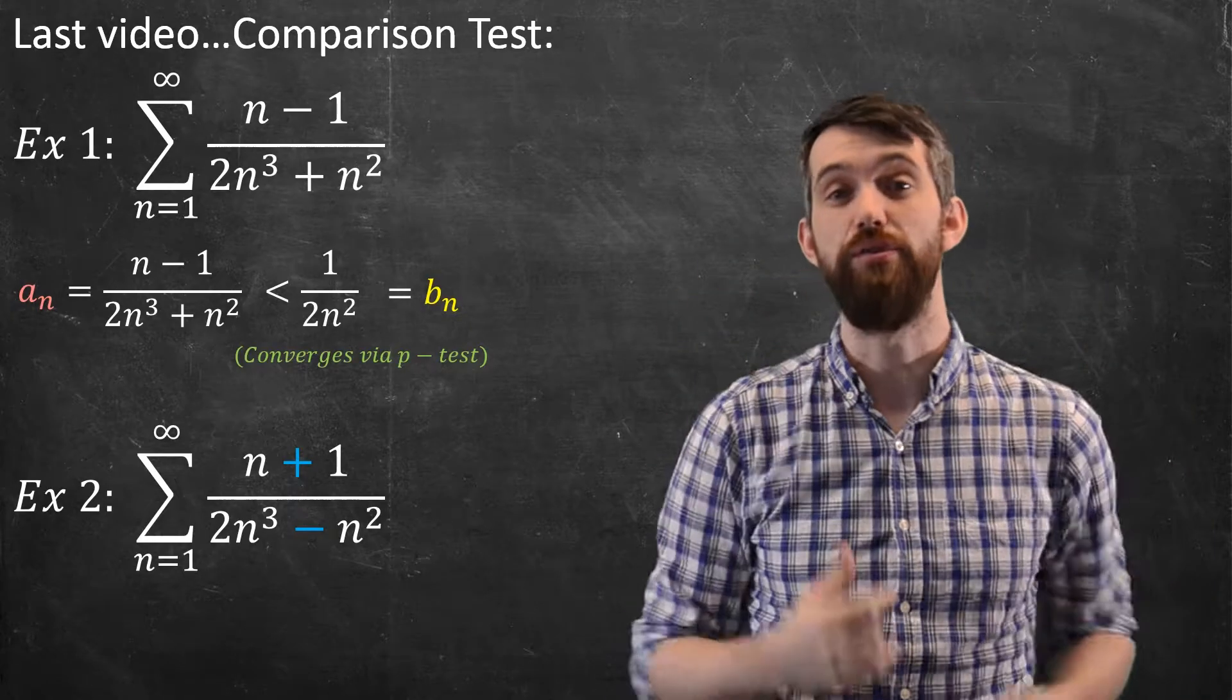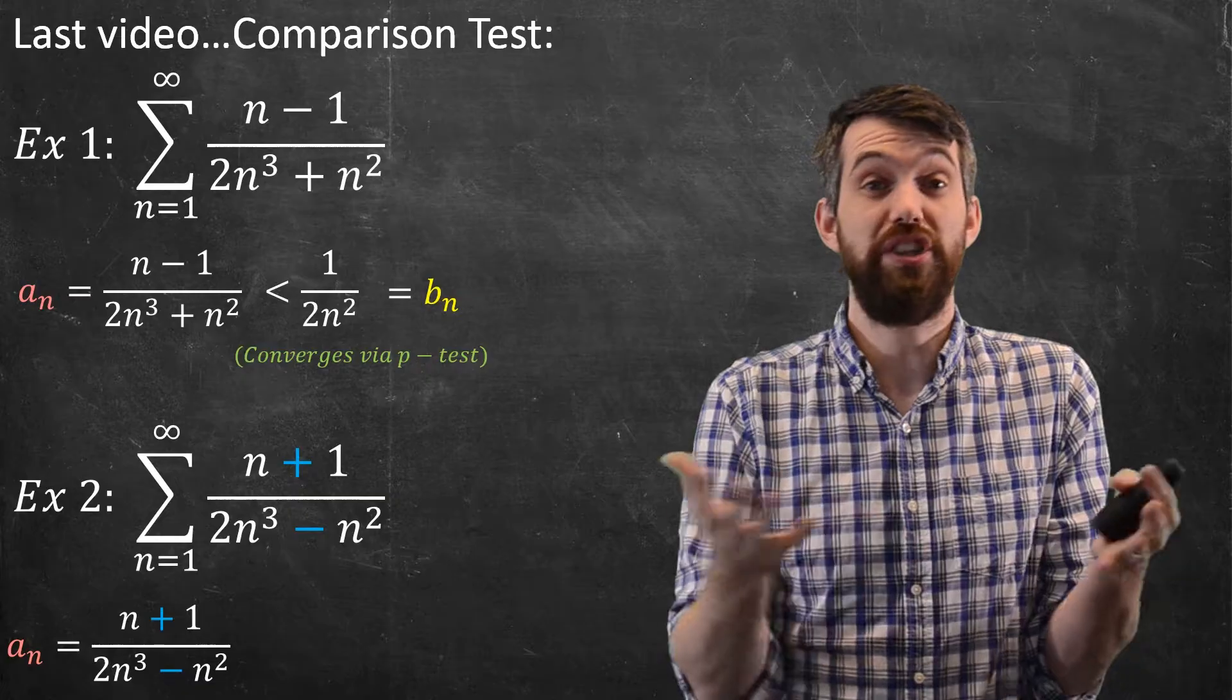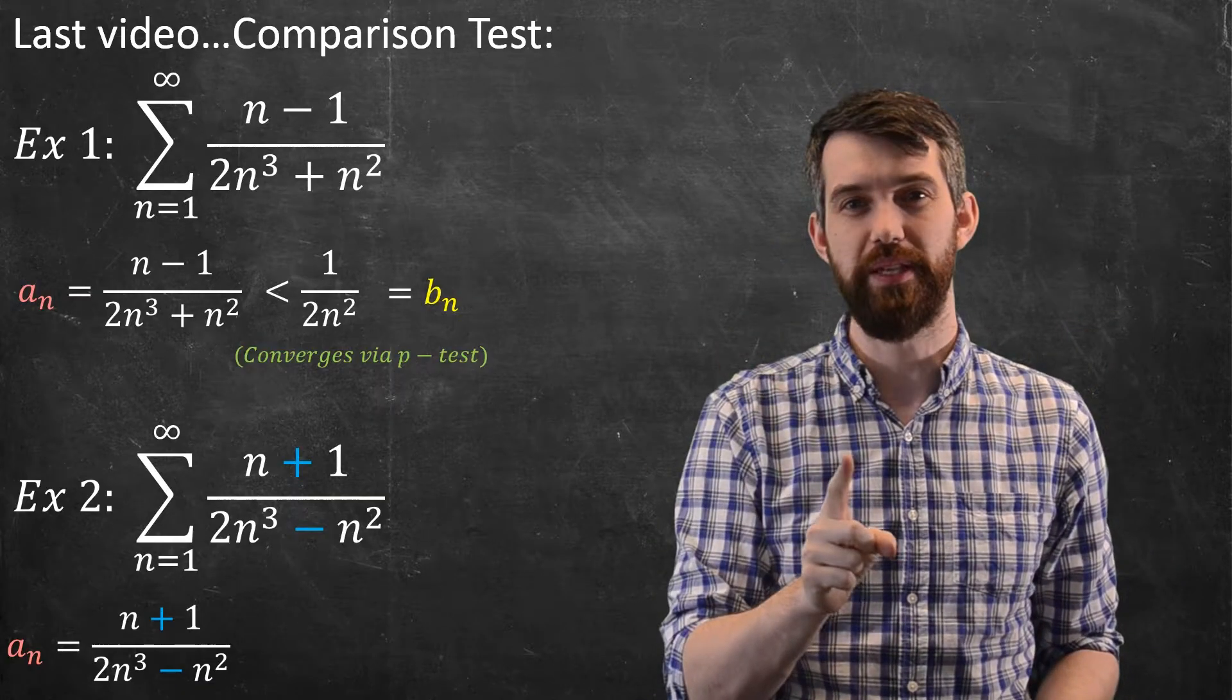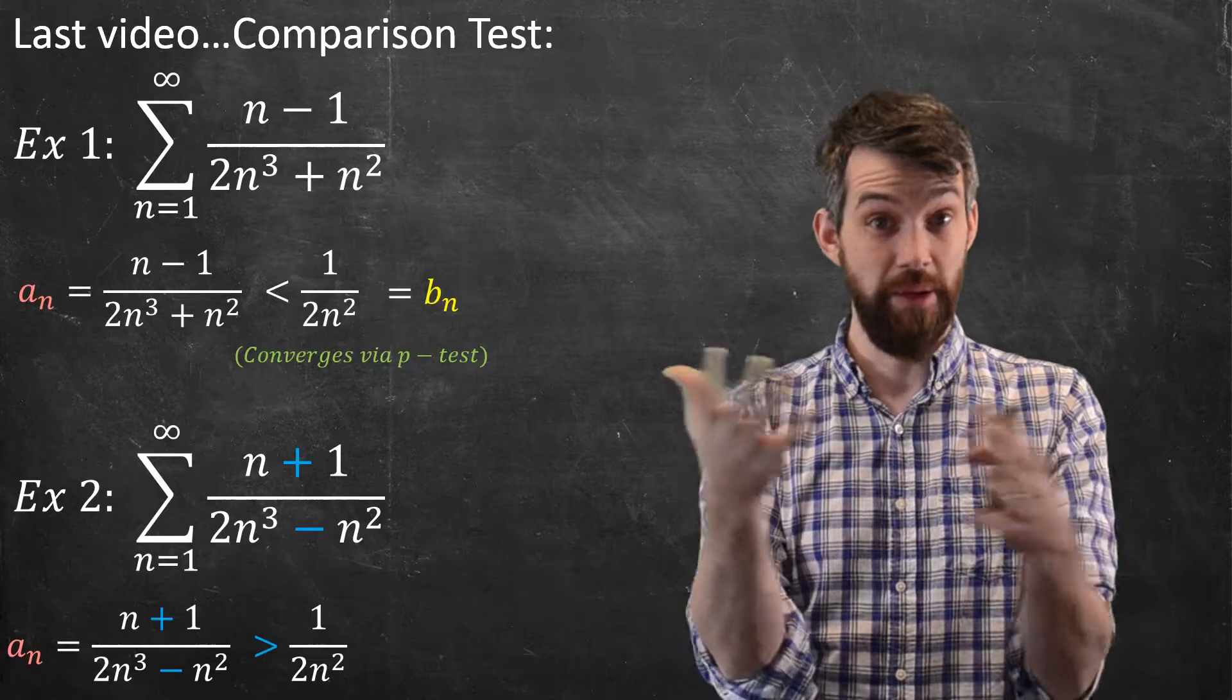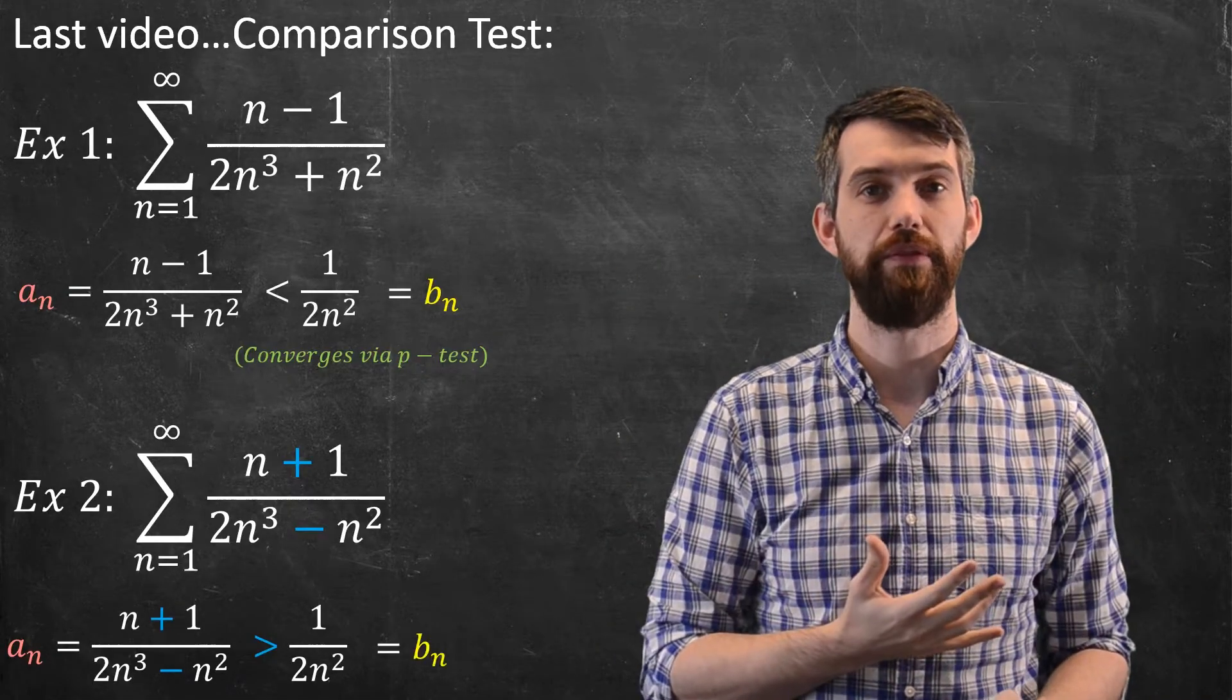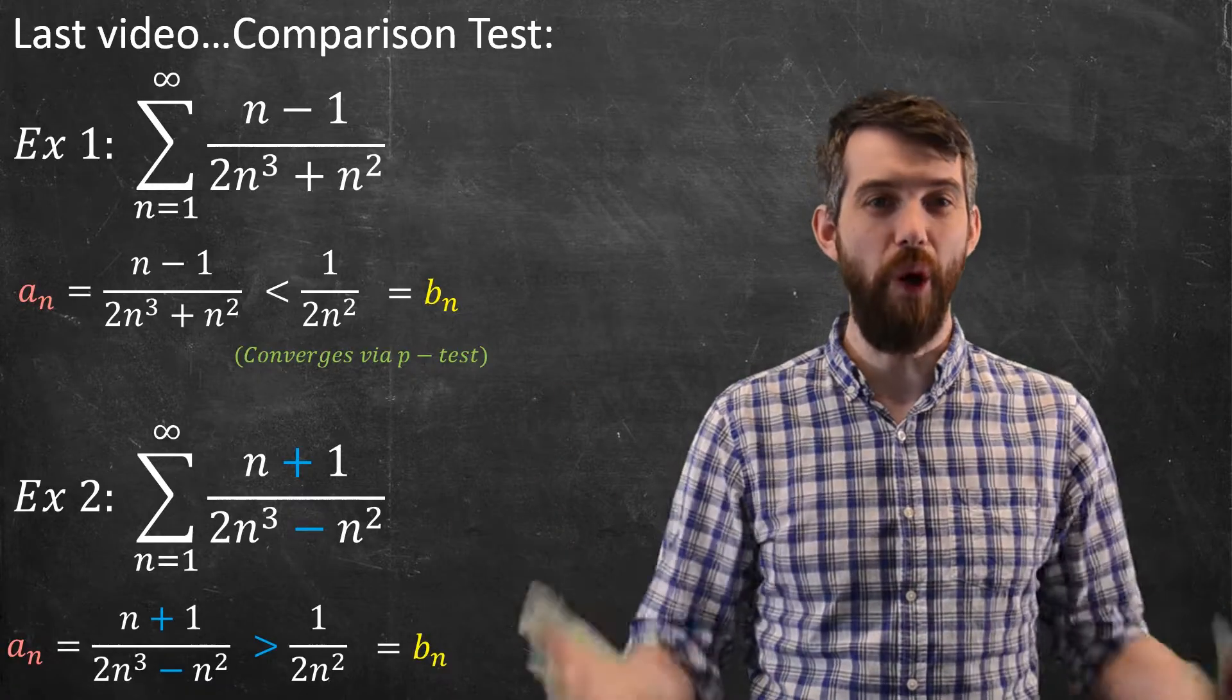So let's try to use a comparison test. We can establish the a_n, but now the inequality flips. Now it's not less than the b_n that's above, it's greater than that b_n that was above. But this doesn't tell me anything at all.